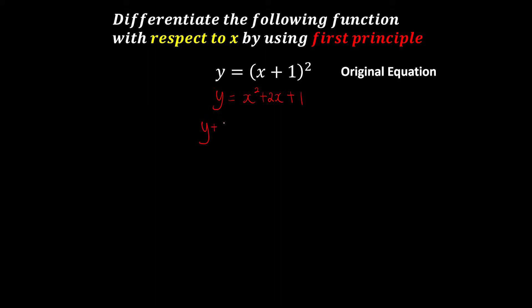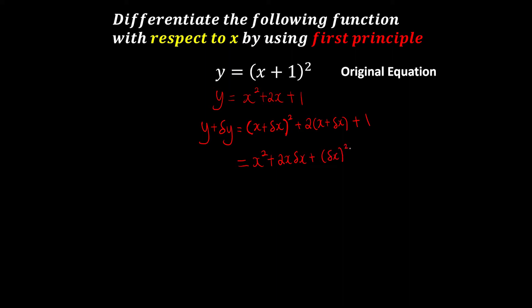After that, we're going to apply the small changes — remember that? Small change in y, and the same thing: x gets a small change delta x applied to all x's inside the equation. Then we need to expand one more time for whatever is inside the brackets, giving us x squared plus 2x·delta x plus delta x squared, and expanding the bracket 2x plus 2·delta x plus 1. This is just y plus delta y.